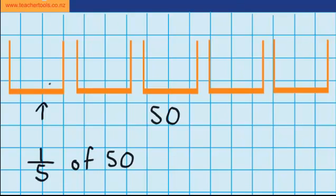Let's start by seeing what would happen if I put 2 tennis balls in each container — 2 here, 2 here, 2 here, 2 here and 2 here. Now I'm good at skip counting in 2s, so I know 2, 4, 6, 8, 10. Now that's nowhere near enough — I've only shared out 10, but I need to share out 50. So I'm going to have to think of a bigger number that I could put in each container.